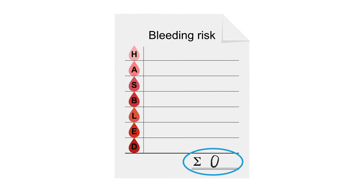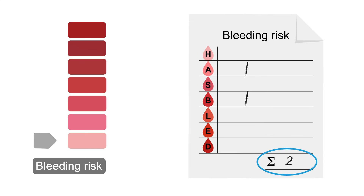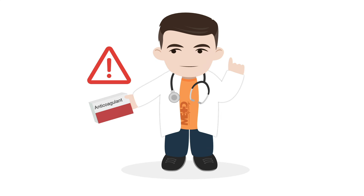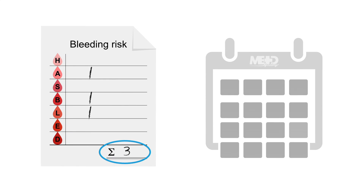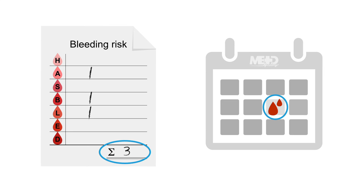This means a HAZ-BLAD score can range from 0 to 9. The higher the HAZ-BLAD score, the higher the risk of bleeding. A score below 3 indicates low bleeding risk, but a score of 3 or more suggests a higher risk of bleeding and a more cautious approach to anticoagulation is needed. It's recommended that you re-assess bleeding risk regularly after starting these patients on anticoagulation.